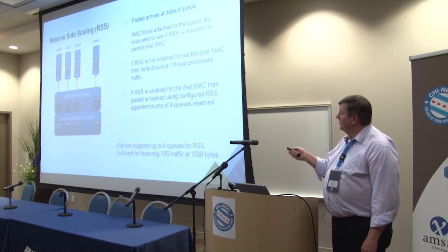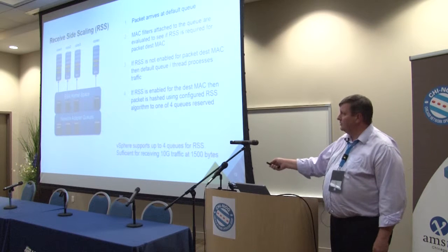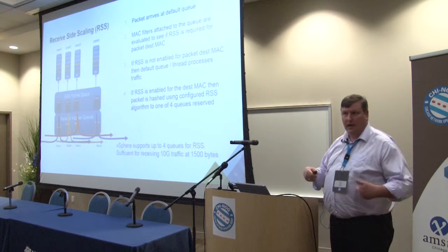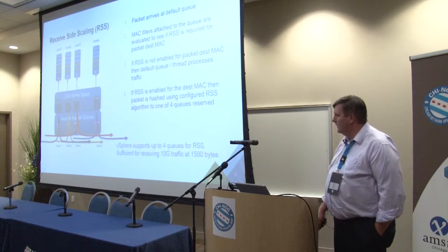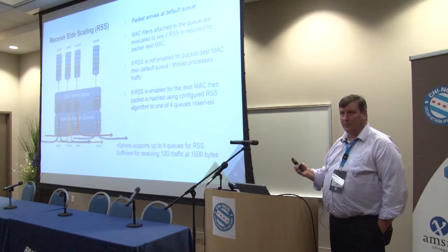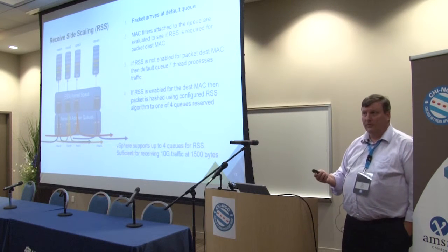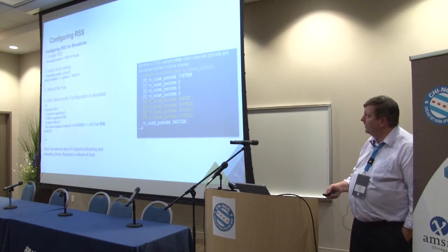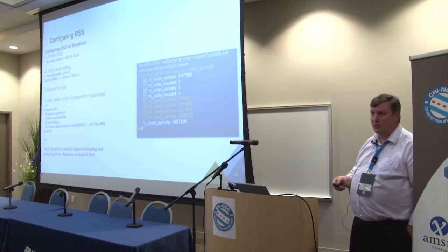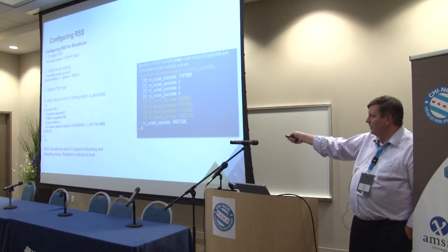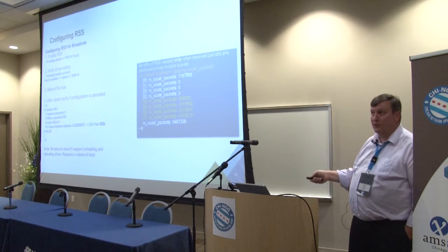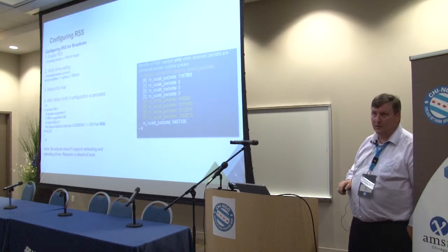With Receive Side Scaling, as a packet arrives at the default queue, it's inspected. If it's destined for a VXLAN VTEP MAC, it gets distributed across multiple queues serviced by different cores in the hypervisor. If it's not VTEP traffic, it goes to the default queue and is processed single-threadedly. This smooths the workload out across the hypervisor. It's a feature that takes advantage of NIC hardware capabilities and needs to be enabled via the driver. Here's an example of configuring Receive Side Scaling for a Broadcom NIC — you can now see receive packets spread across multiple queues rather than all stuck to the first queue.